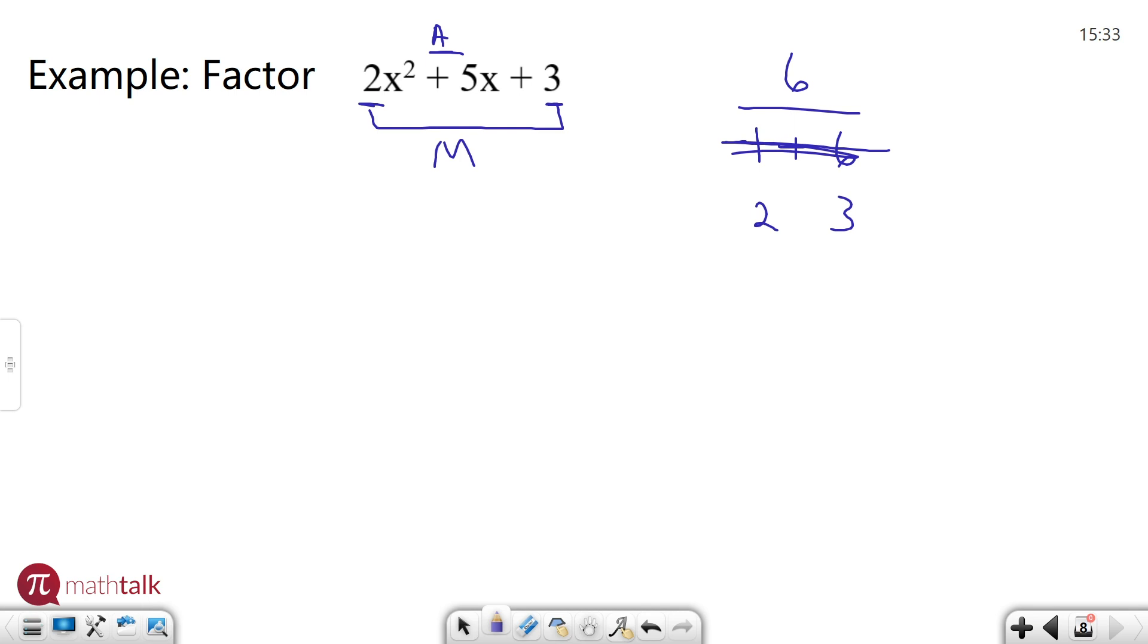Which means two and three have to work. And if you look at it, positive two, positive three are going to get me positive five when I add them together. So let's use these two numbers to split up our polynomial.